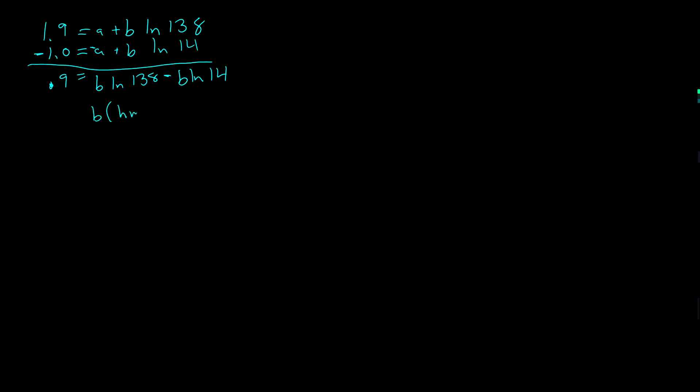I'll write the second one first: 1.9 equals a plus b ln 138. I'll write the first equation: 1.0 equals a plus b ln 14, and I'm going to subtract. 1.9 minus 1.0 is 0.9. a minus a is 0, so the a term goes away. I can factor a b out, so I get ln 138 minus ln 14 with a b out front. I'll simplify my logs. I get ln 138 divided by 14. So my b is going to be 0.9 divided by the natural log of 138 over 14. Let's run over to the calculator and we get 0.3933. I'll keep four decimal places.